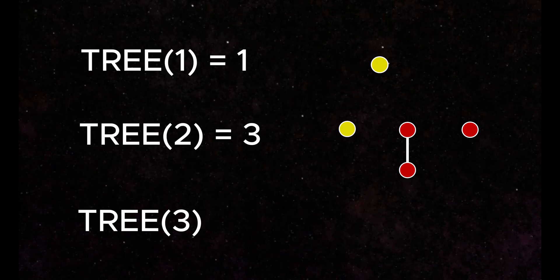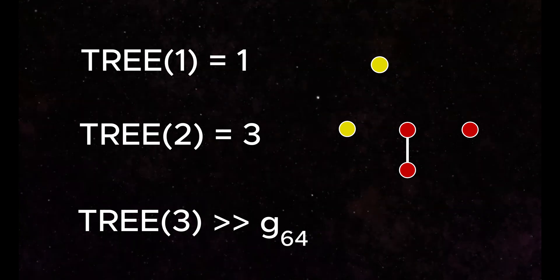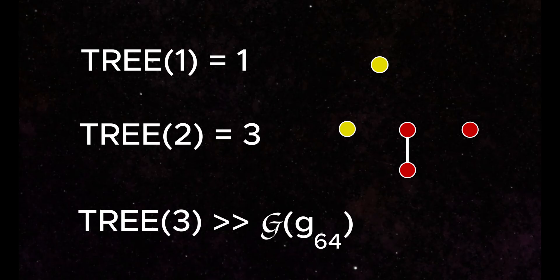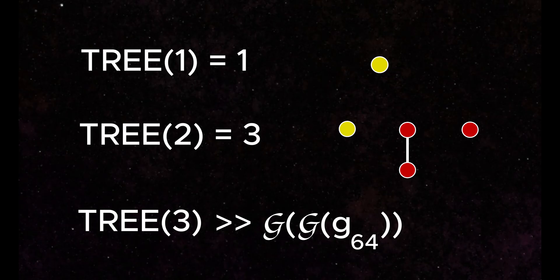So we must ask: how long can this game go? Friedman defined the function TREE to describe the longest possible length of these sequences. TREE(1) ends abruptly at just one step. TREE(2) continues further and terminates at three steps. TREE(3) jumps to a number so large that it not only dwarfs Graham's number, but it dwarfs the Goodstein function evaluated at Graham's number, or even the Goodstein function of the Goodstein function of Graham's number. This is such a stunningly large leap it raises the question: exactly how fast is the TREE function?